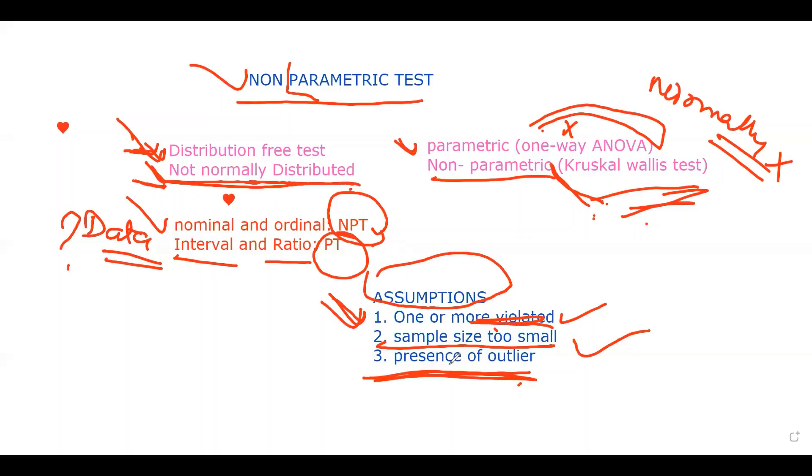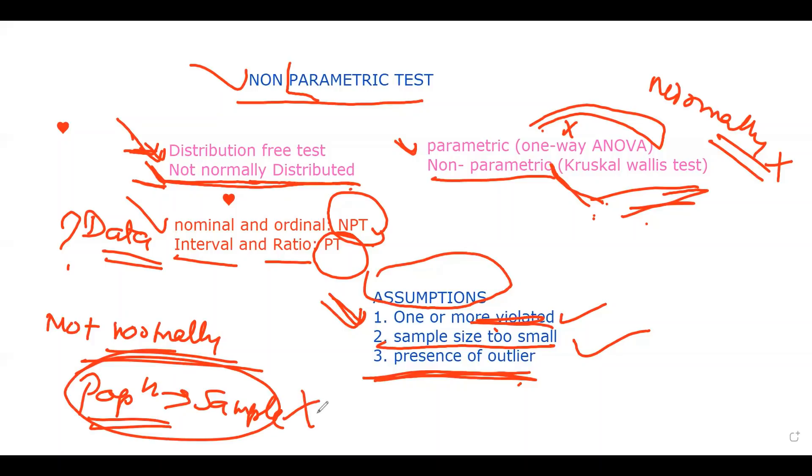So in very simple language, we can say that when my data set is not normally distributed, the population from which I have taken a sample, if it is not normally distributed, we cannot apply the parametric test. And the researcher should go for the non-parametric test. There are different types of non-parametric test that we will discuss in the coming videos. Thank you.